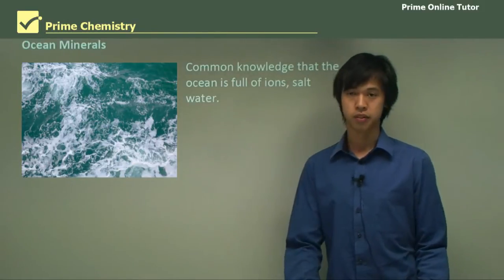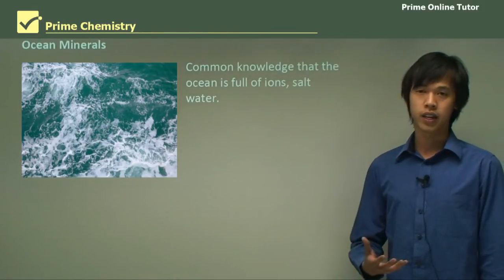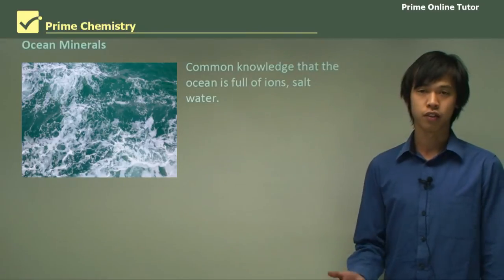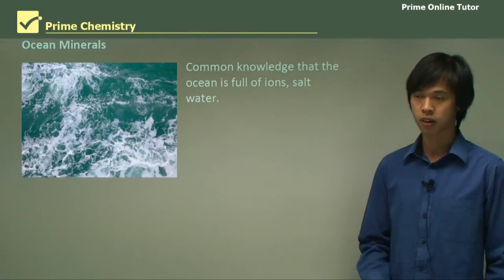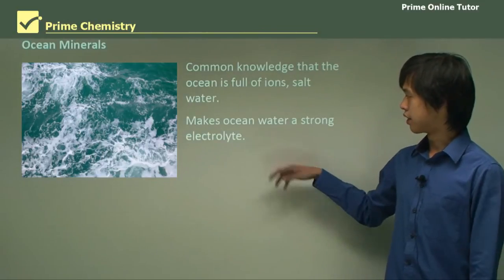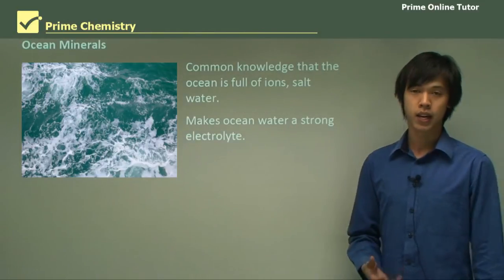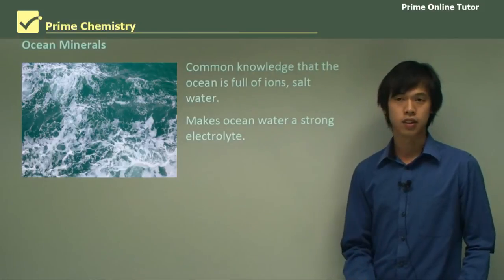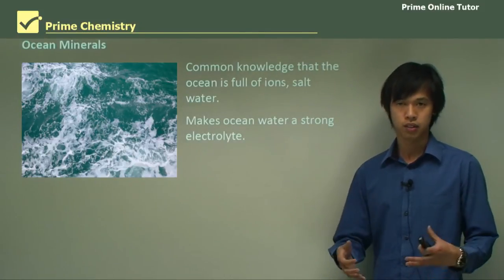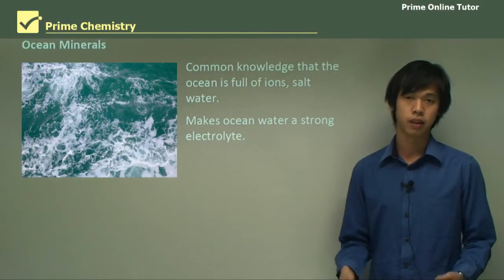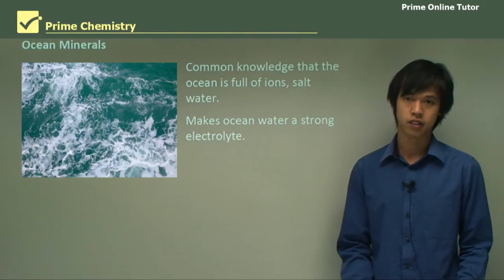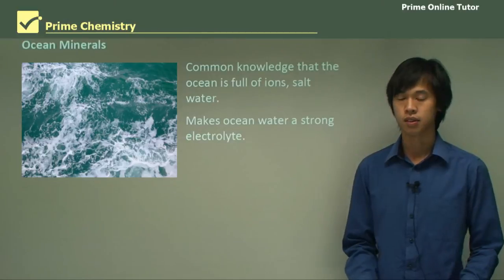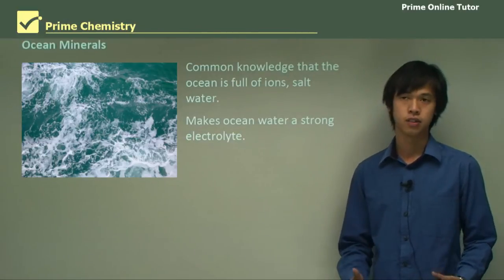Ocean minerals. We know that when we take a jar full of ocean water, it's full of different ions, particularly salt, sodium chloride. Because there's so many ions in it, it makes ocean water a particularly strong electrolyte. If we were to conduct electricity through it, it would have a much greater current than say a dilute solution of sodium chloride. It's quite concentrated for a natural substance.